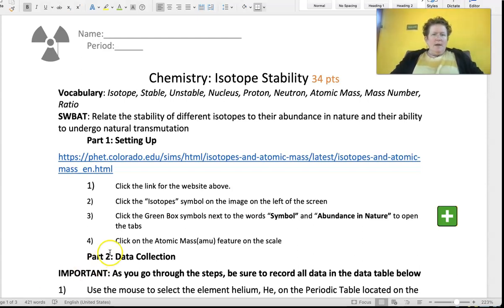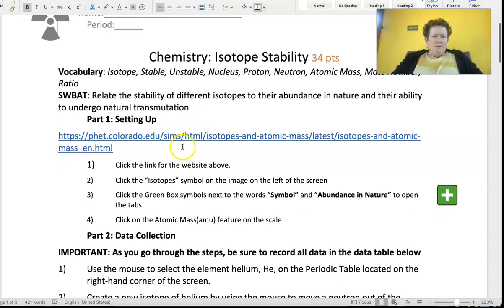Hello students, let's look at isotopes and their stability. Our first mission here is to go to PhET, click the link, click isotopes, click the green box with a plus sign, and click atomic mass on the scale.